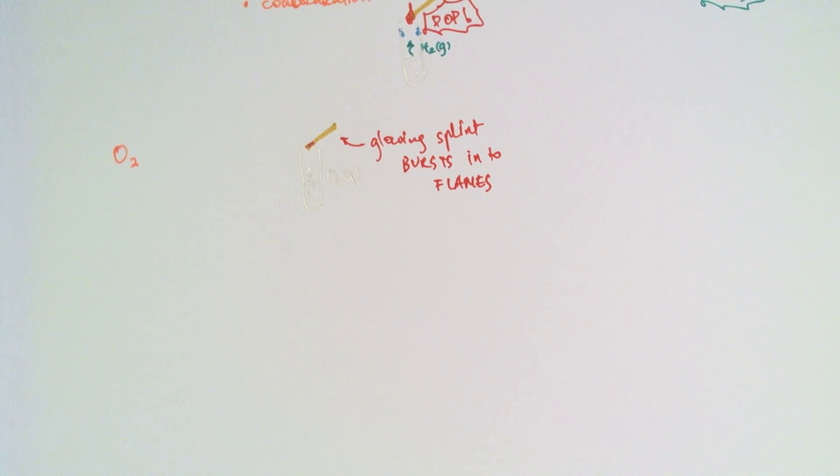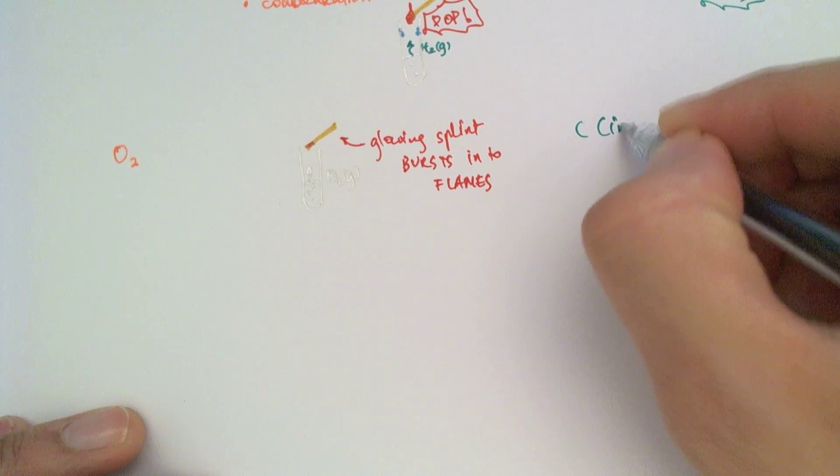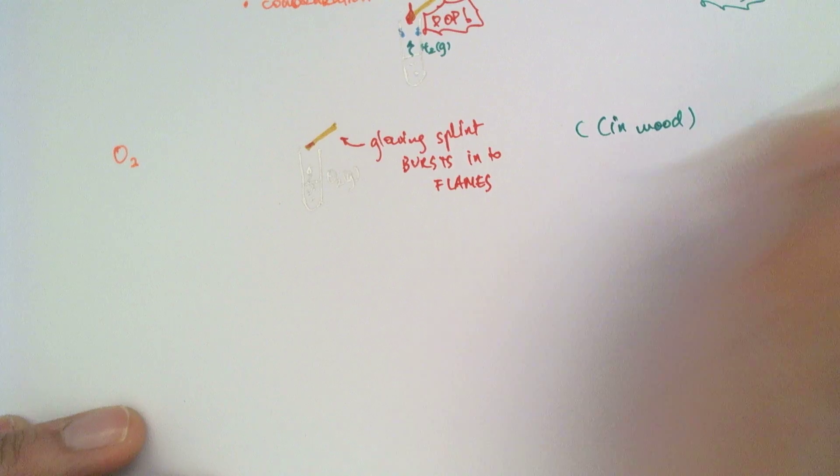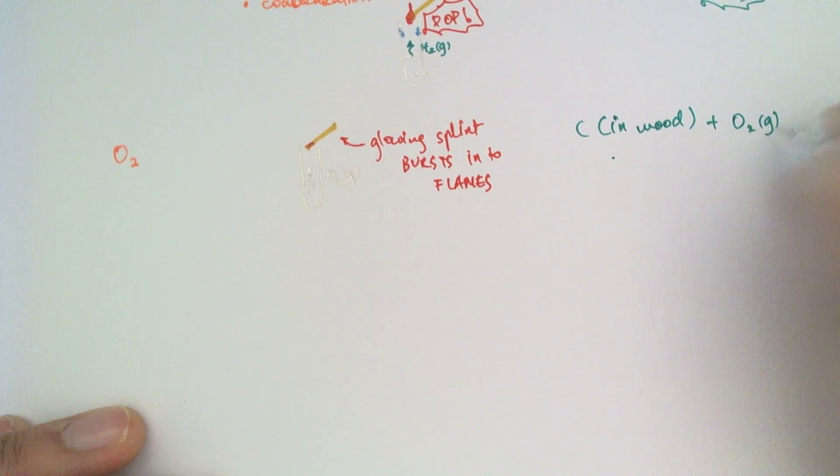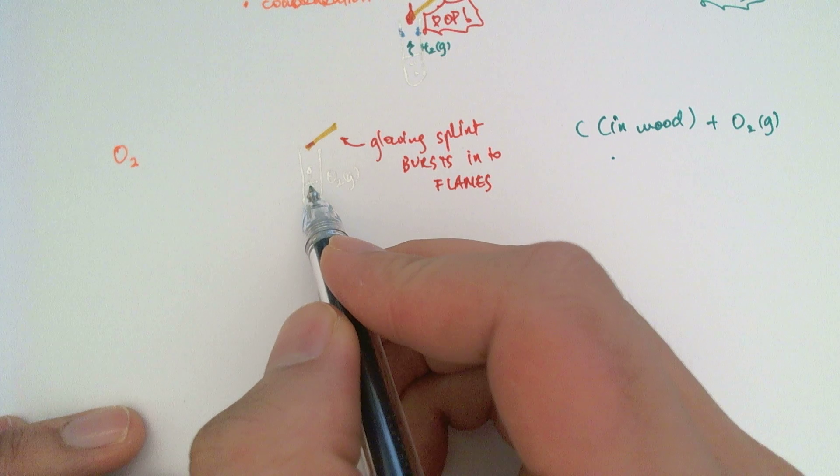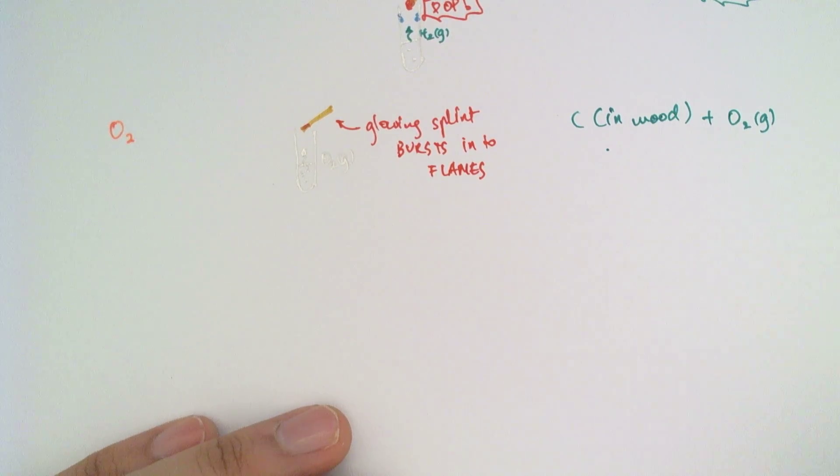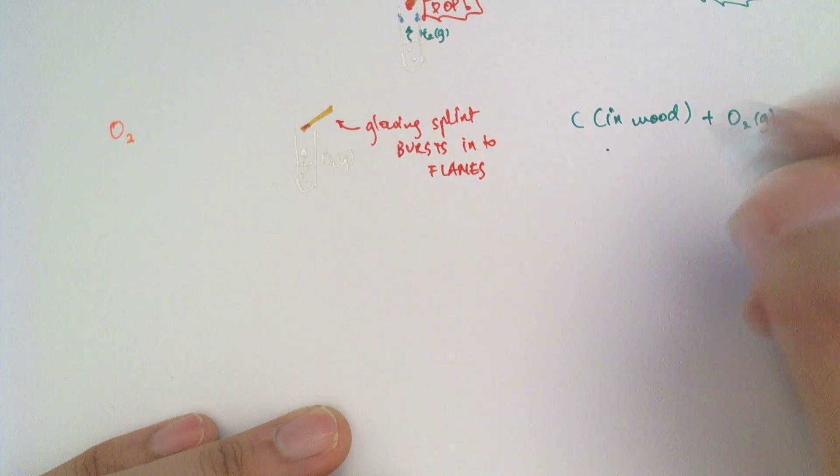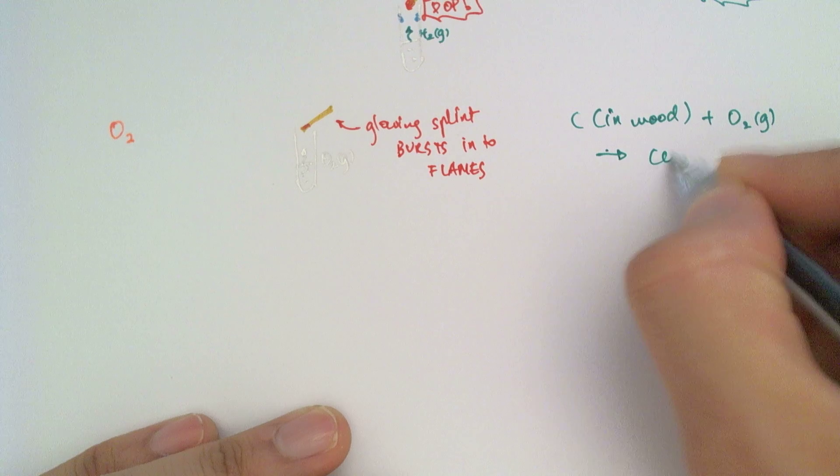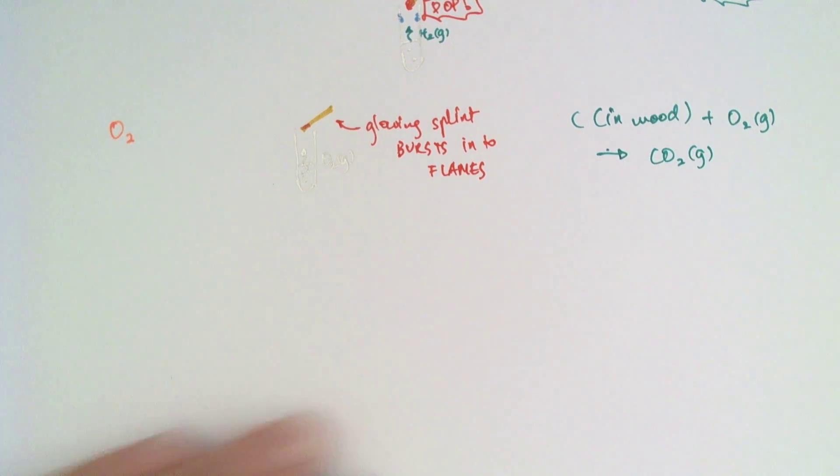So the reaction taking place here is that the carbon in the wood of the splint reacts with the oxygen gas that was liberated from here. It wouldn't normally burst into flames in 21% of oxygen in the air. But because you have pretty much 100% oxygen coming out here, they will react to form carbon dioxide gas, hence giving you those flames.